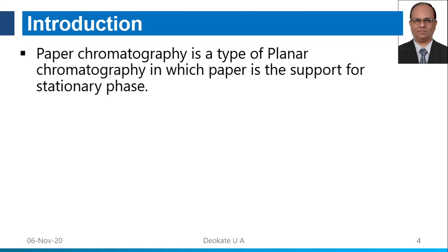In our last chromatographic lecture, we studied that chromatography can be classified into various classes depending upon the type of separation, such as planar chromatography and columnar chromatography. In planar chromatography, the two examples studied are paper chromatography and thin layer chromatography — where surface separation is performed.